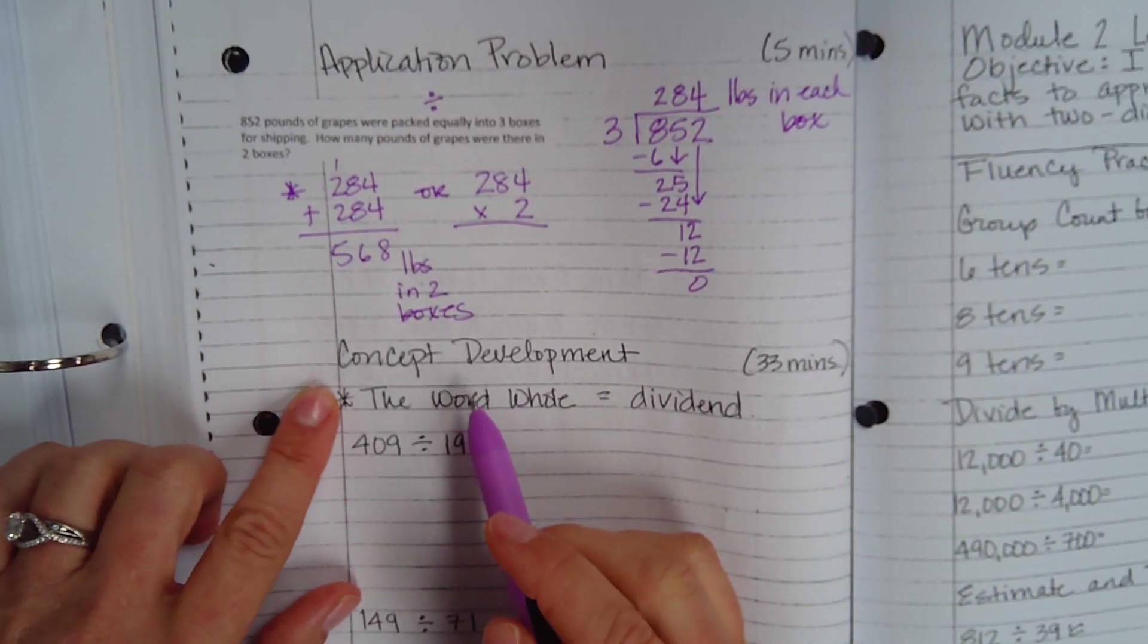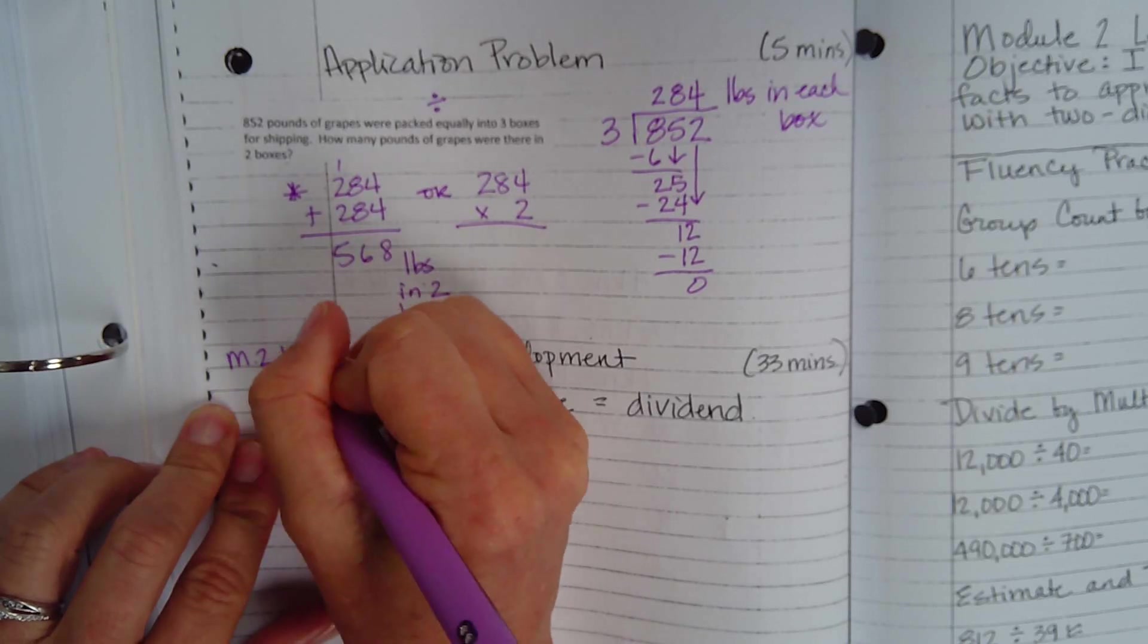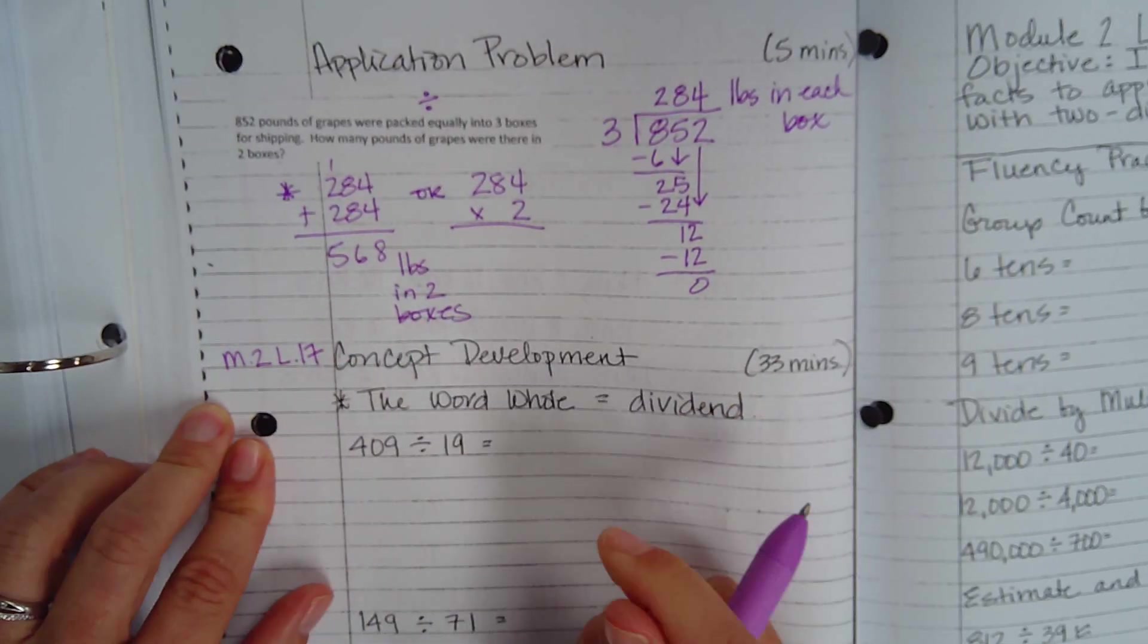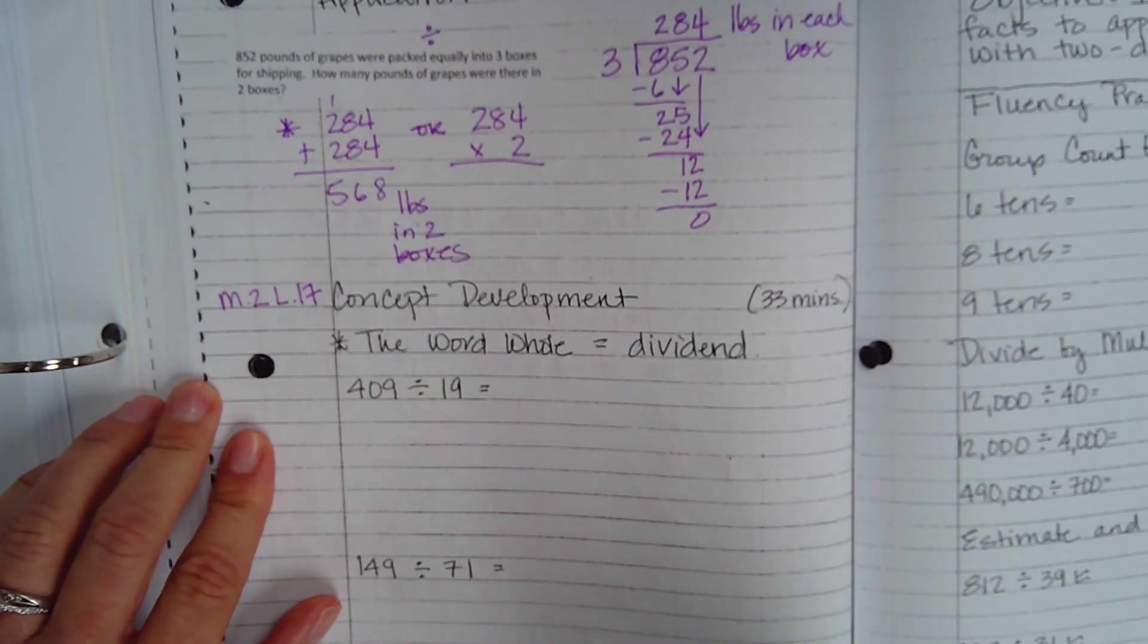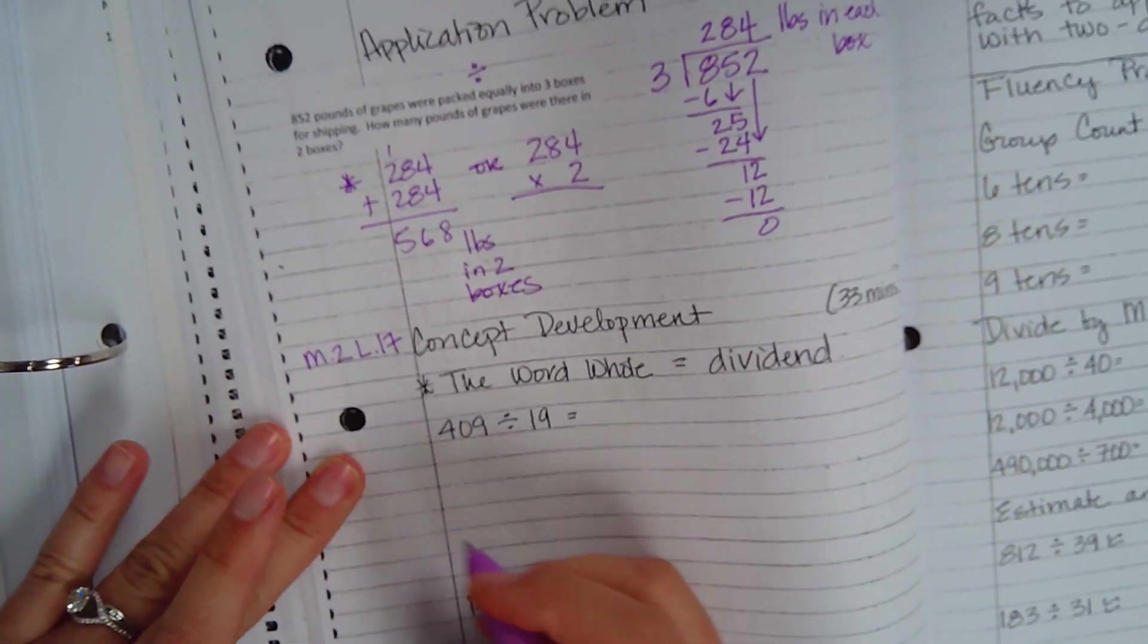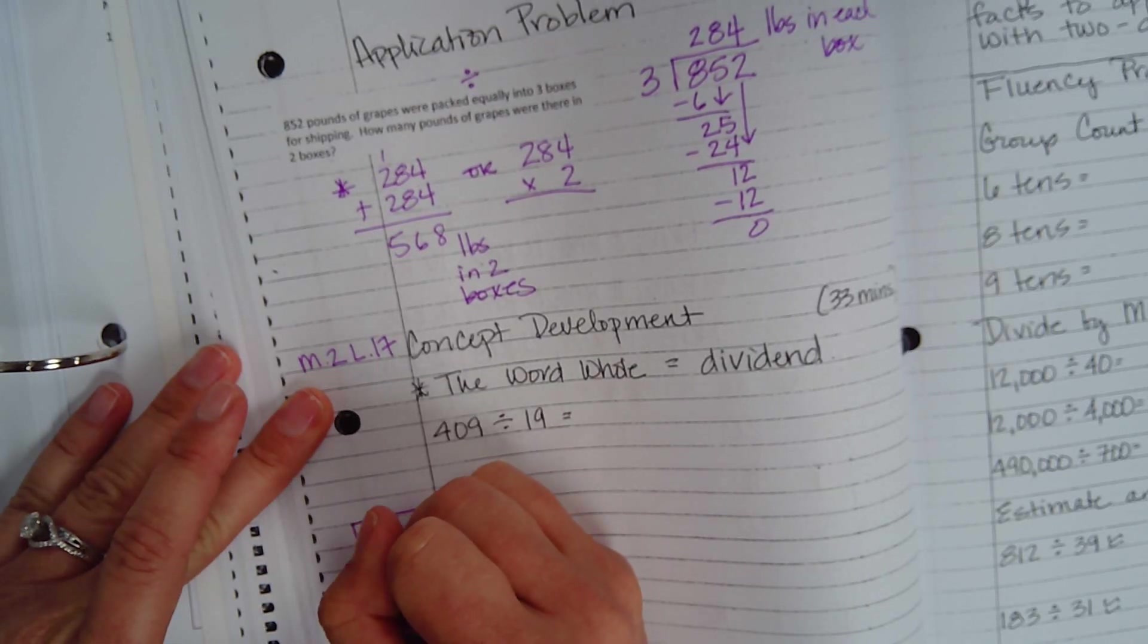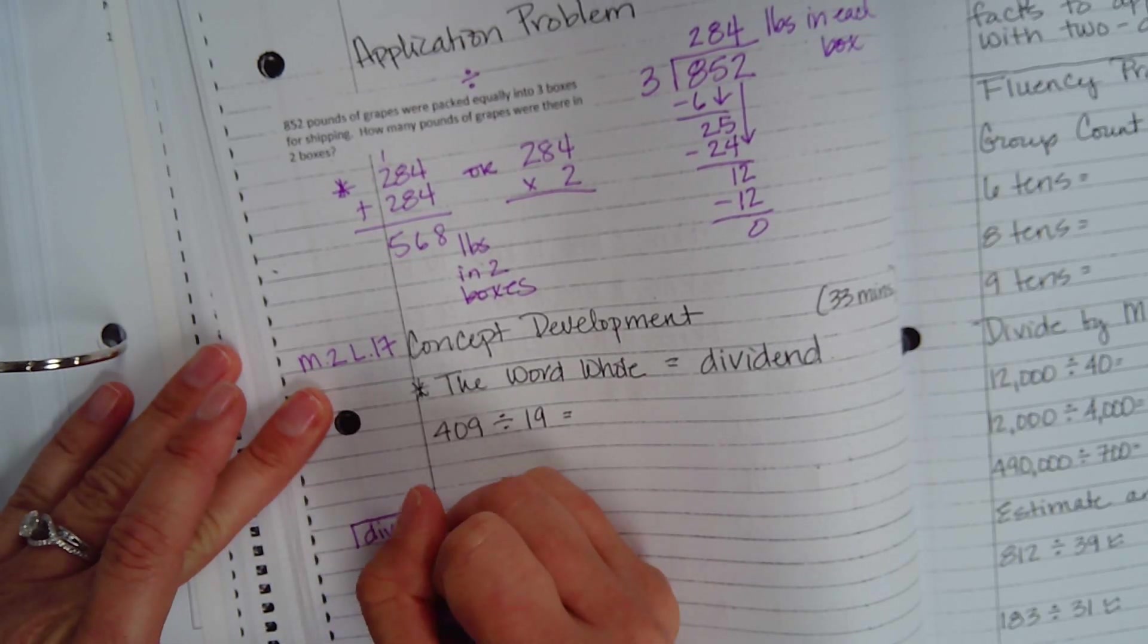All right, this is Engage New York, Module 2, Lesson 17, Concept Development. All right, to start off with, I want to draw a picture for you guys really quick. I want you to use the word dividend, and I want you to write this down.